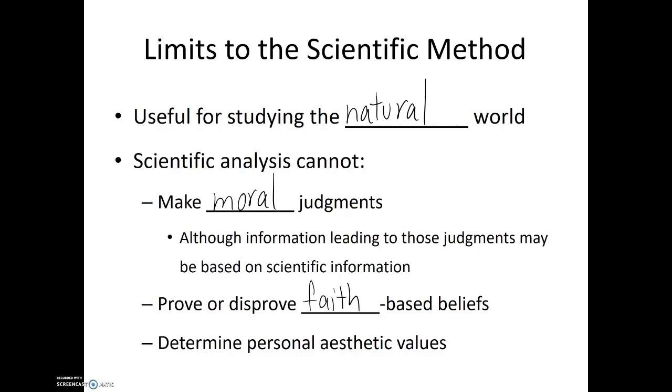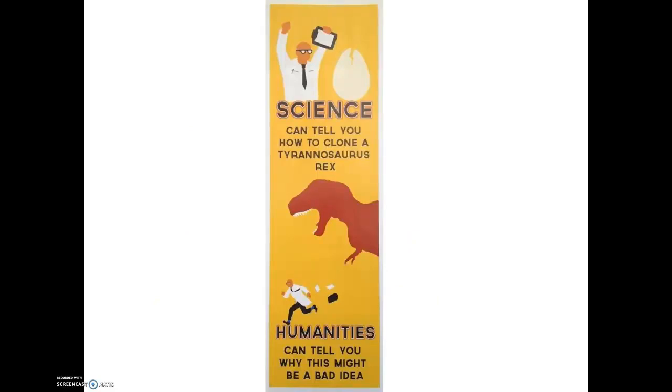Another thing that science doesn't have a say on is personal aesthetic values. Science can't say which style of music is the best. Science can't say whether a picture is beautiful or ugly. Those are in the realms of personal aesthetic values. Now, a friend of mine posted this picture a while ago. Science can tell you how to clone a Tyrannosaurus rex, whereas humanities can tell you why this might be a bad idea. Now, it's not saying that all science is foolhardy or shouldn't be attempted, but don't leave it to science whether something should happen or not. Science just tells us if something can happen.